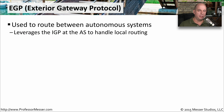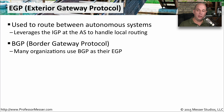If we need to route between autonomous systems, we're using EGP, or an exterior gateway protocol. These are the protocols exterior to our autonomous system, and they allow multiple autonomous systems that may all be configured and managed separately to communicate with each other. A good example of an EGP is Border Gateway Protocol, or BGP. This is the most popular protocol in use because it allows all devices connected to the internet to route between each other, and it has effectively become the de facto standard for exterior gateway protocols.